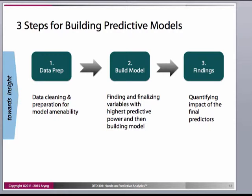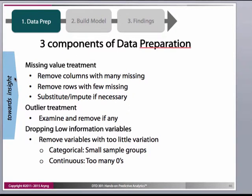We have three main steps for our predictive analytics framework. First is data prep — the very first step — where you clean and prepare data to make it usable for your models. Then you build your actual models, identifying which variables are most predictive and helpful in explaining your outcome. Finally, you need to translate your model output or findings into something easily interpretable for your audience.